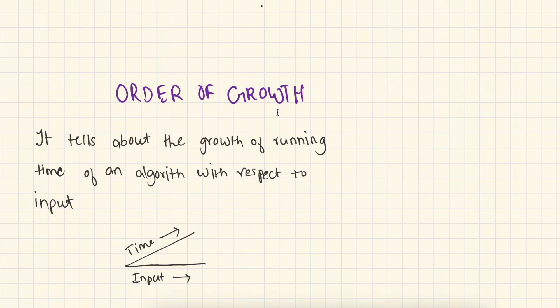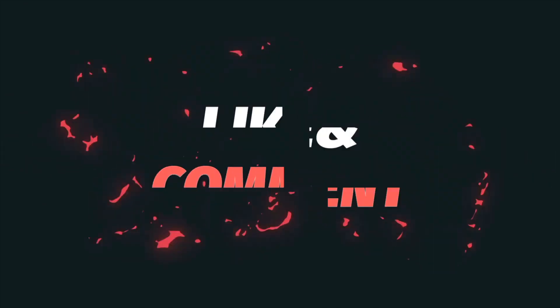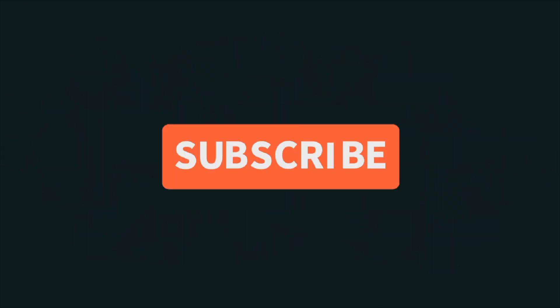So why do we use order of growth instead of other factors? Because order of growth tells us the growth of running time of an algorithm, and we are interested in larger input sizes, not smaller ones. I hope it is now clear how order of growth works. This is it for this video. Thanks for watching. See you in the next video. Bye.